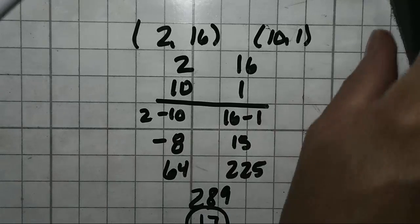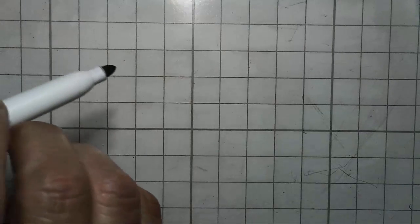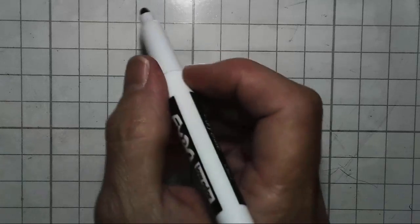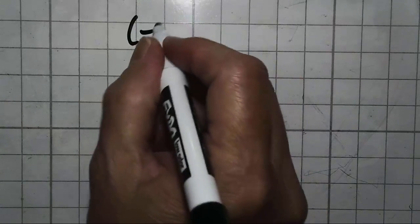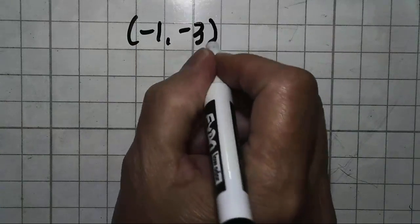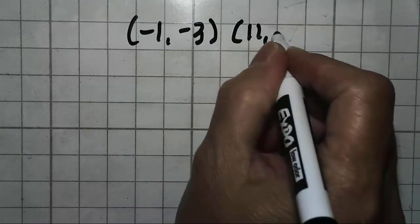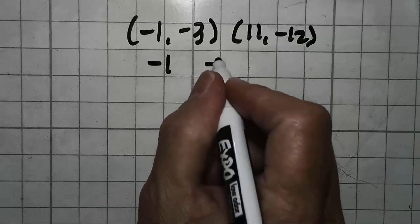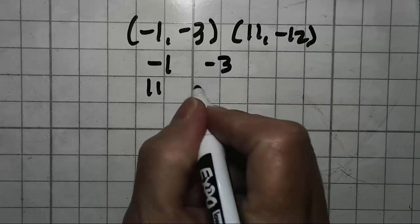Let's do one more problem. As I said, these really aren't very difficult once you put them in order, once you get them organized so that it makes sense to you. So let's do negative 1, negative 3, and 11, negative 12.